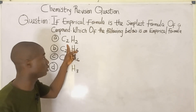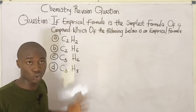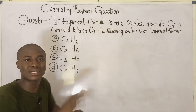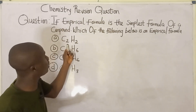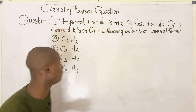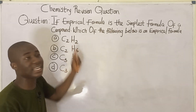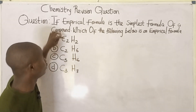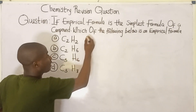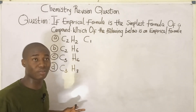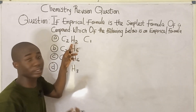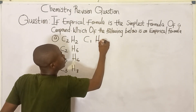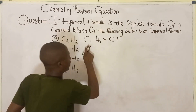Looking at option A, which is C₂H₂ — is this the simplest form this compound can exist? No, it is not. I can break this compound further by dividing all the numbers by 2. Two divided by 2 is 1, and the same applies to the hydrogen: 2 divided by 2 is also 1. So I get C₁H₁.